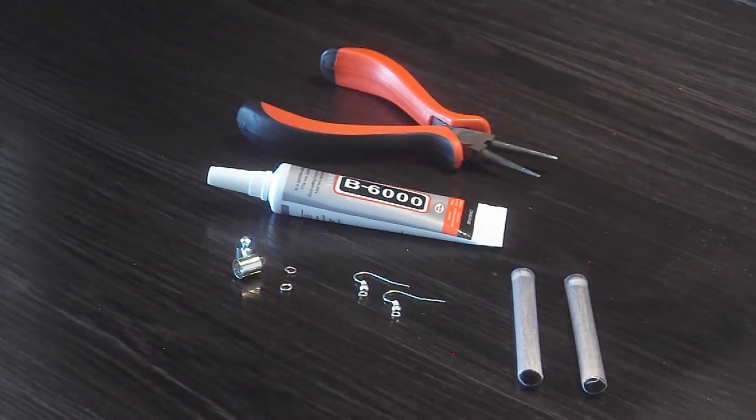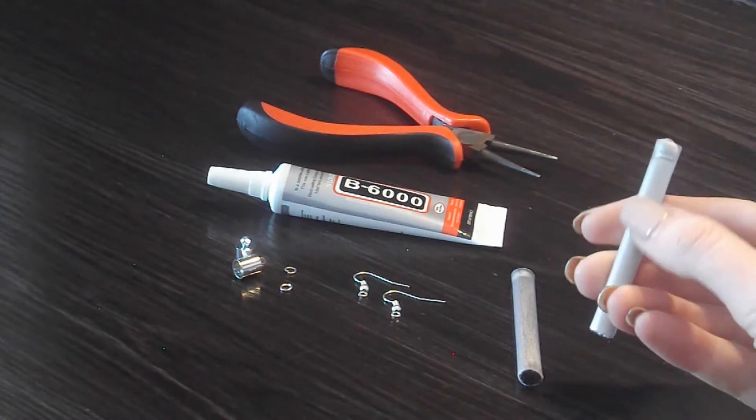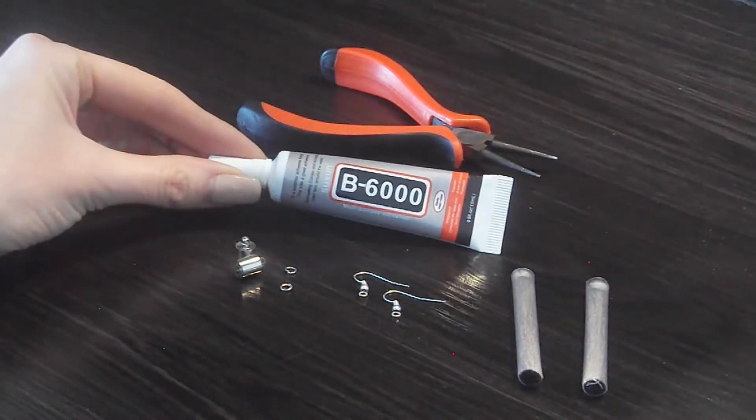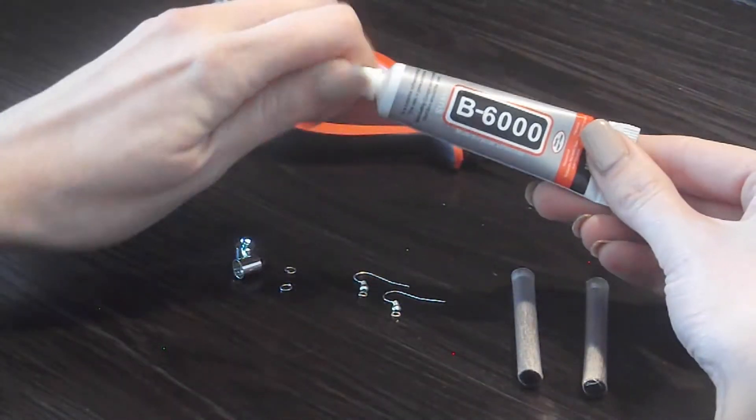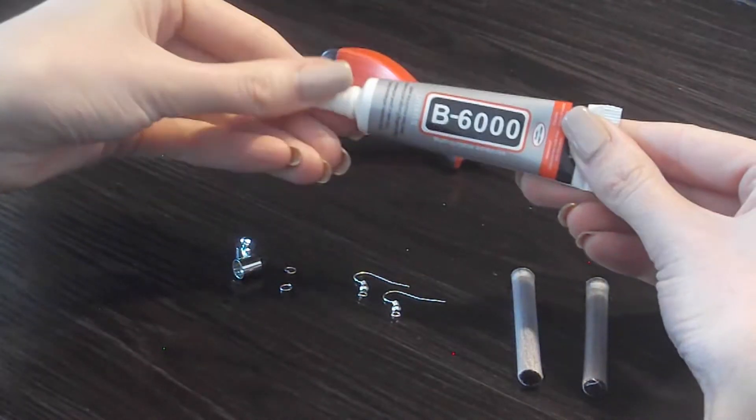Okay, so let me show you what you're going to need. I've chosen these long grey tassels. You can choose any color, any length, any style that you're going to love wearing. You're going to need B6000 glue or E6000. They are exactly the same. It's just the B6000 has a really lovely precise tip, which I personally prefer.